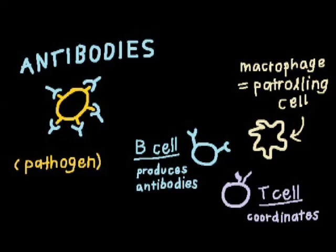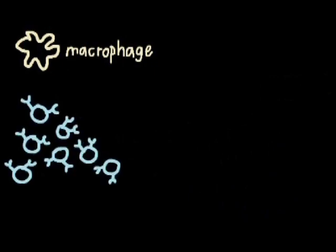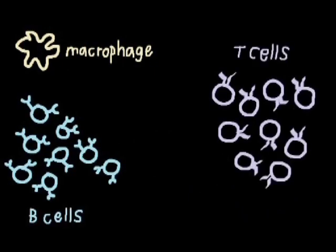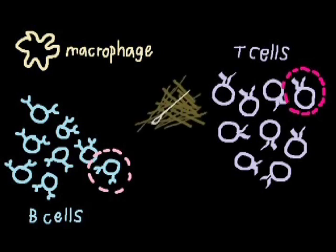In order to fight off the pathogen, the macrophage needs to find the right few B or T cells out of all the cells in the body that will make the right antibodies. It's like finding a needle in a haystack.